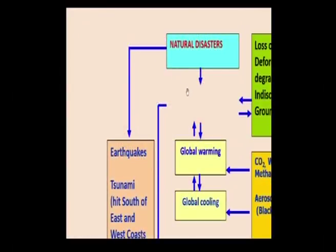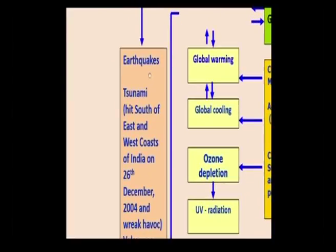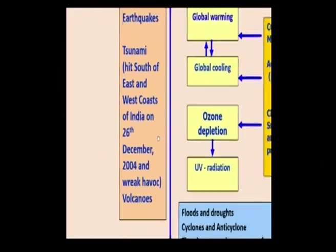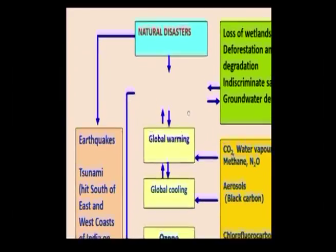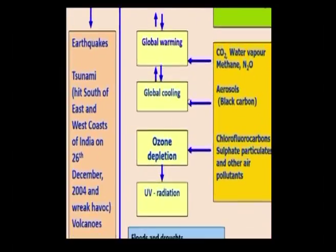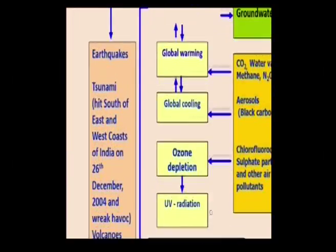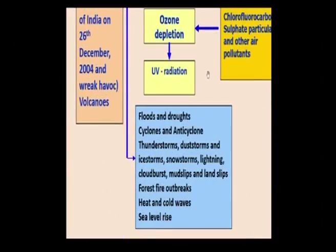Now we will see the various natural disasters. These include earthquakes, tsunamis — such as the one that hit the south and east-west coast of India on 26th December 2004 — and volcanic eruptions. Other natural disasters include global warming, global cooling, ozone depletion, and UV radiation, which take place at a slow rate. Then there are floods, droughts, cyclones, anticyclones, thunderstorms, dust storms, ice storms, snowstorms, lightning, cloudbursts, mudslips, landslips, forest fire outbreaks, heat and cold waves, and sea level rise.